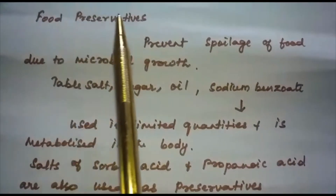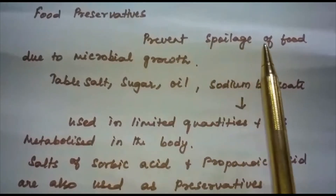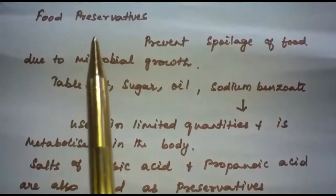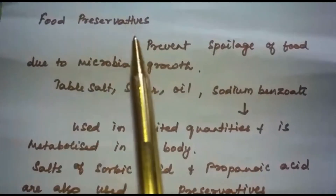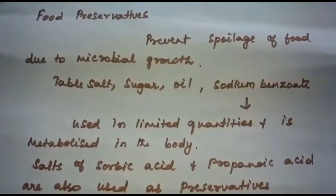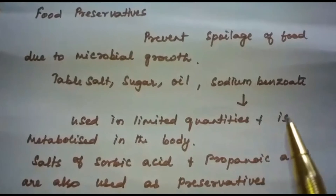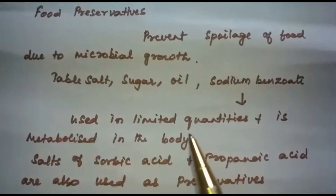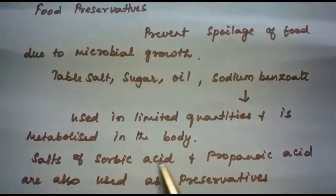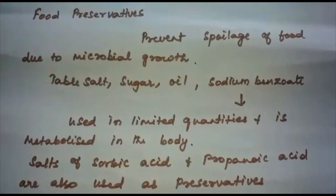Next is about food preservatives. What is the role of food preservatives? They prevent spoilage of food due to microbial growth. Some of the most commonly used food preservatives are table salt, sugar, oil, and sodium benzoate. Sodium benzoate is used in limited quantities and is metabolized in the body. Other chemicals used as preservatives include salts of sorbic acid and propanoic acid.